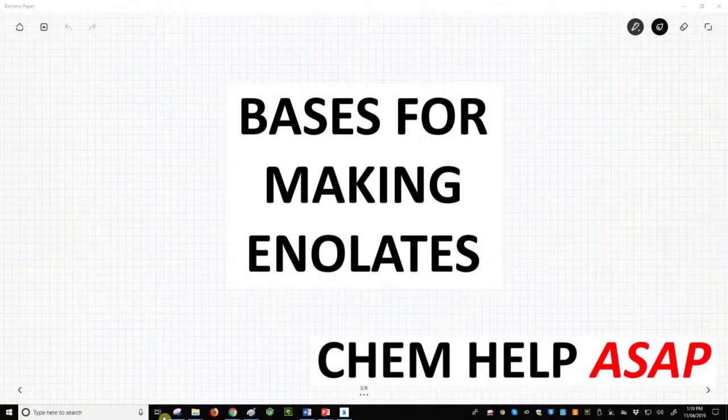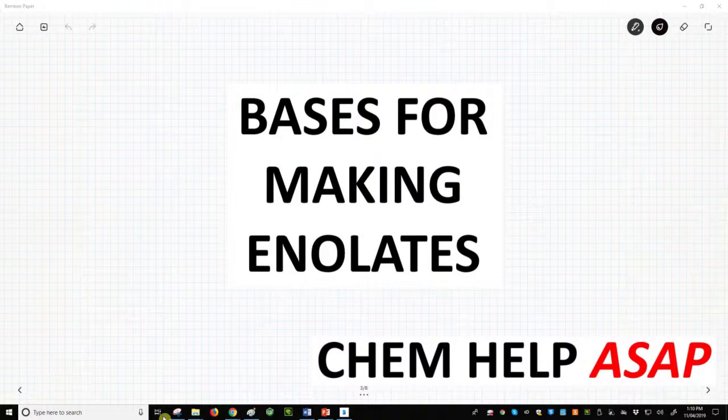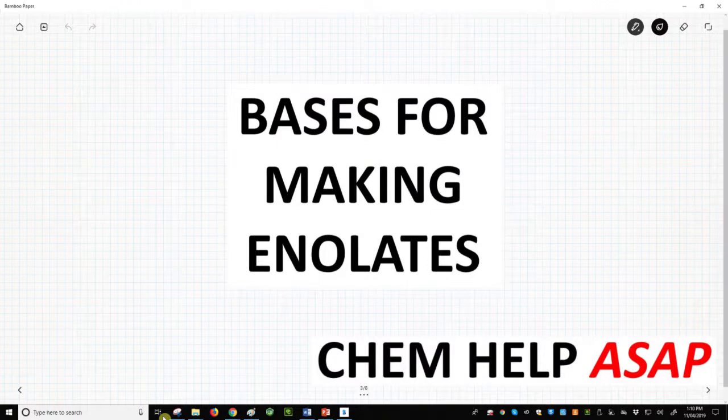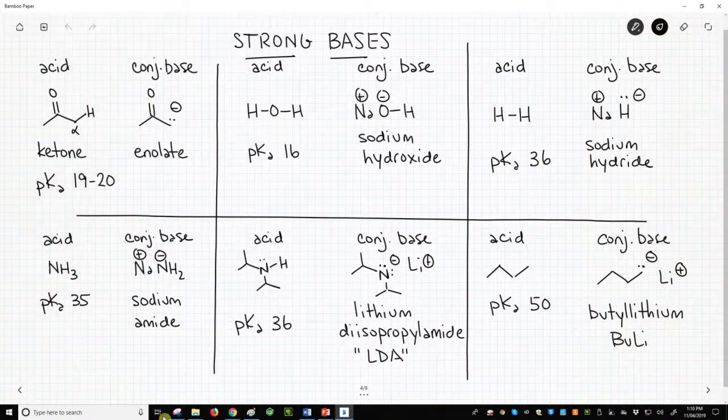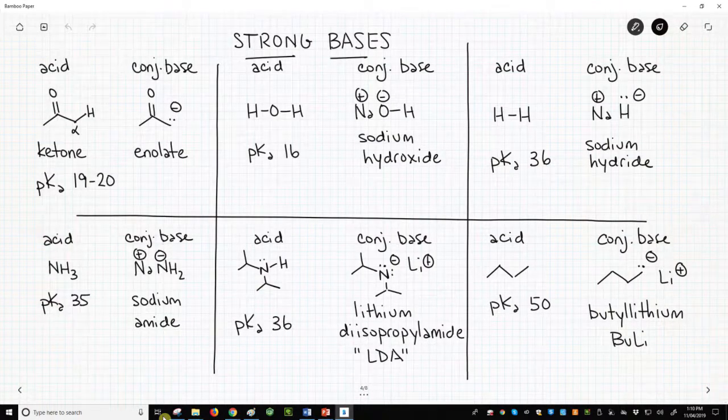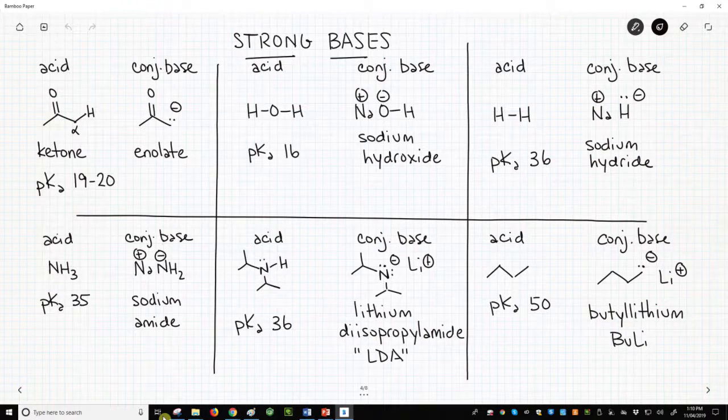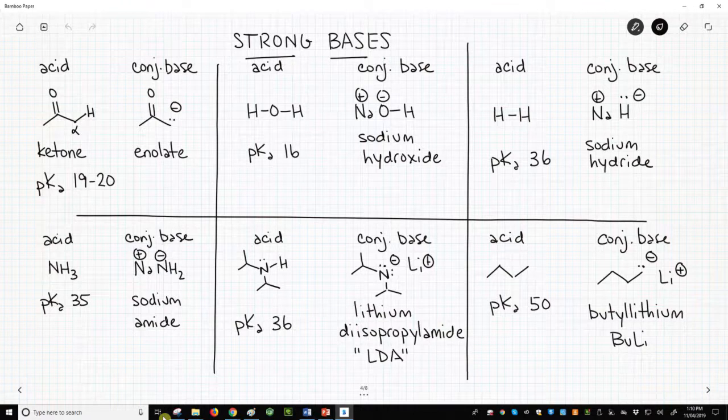Welcome to Chem Help ASAP. Let's learn about bases that can and cannot be used to cleanly deprotonate ketones to make enolates. We have a 2x3 grid on the screen. This grid shows six acid conjugate base pairs with the pKa values of the acids.